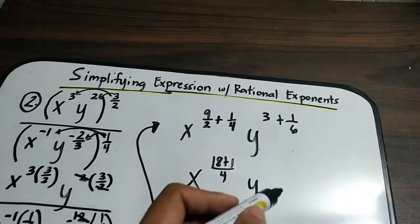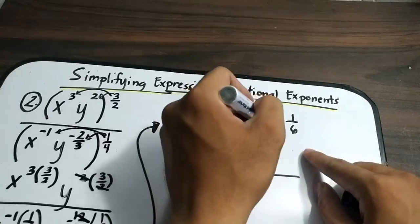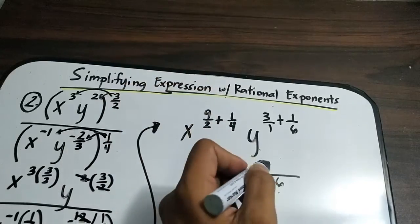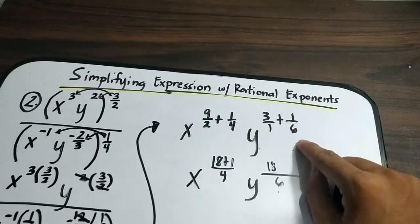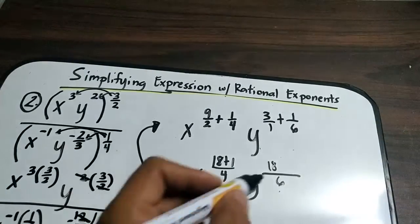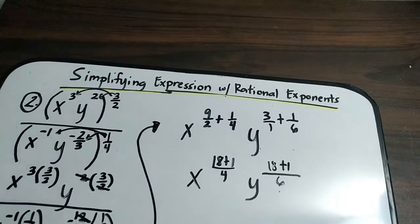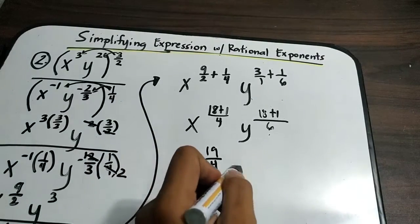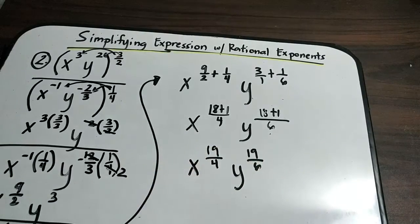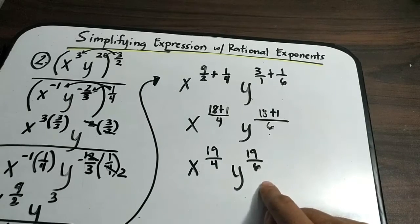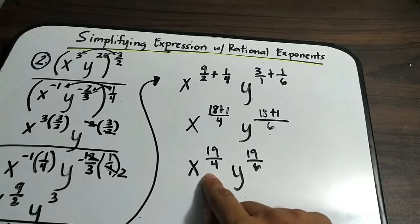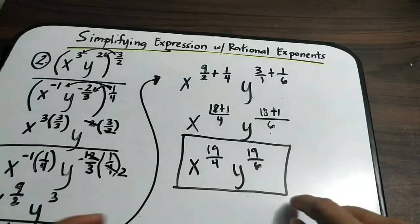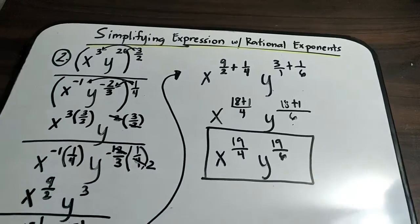For the y variable, the LCM of 6 and 1 is 6. We have 6 divided by 1, which is 6 times 3, giving 18; and 6 divided by 6, which is 1 times 1, giving plus 1. Simplifying the exponents, we have x raised to 19 over 4 and y raised to 19 over 6. Since the exponents cannot be simplified further, this is the final answer for example number 2.